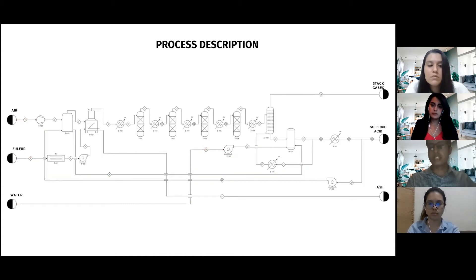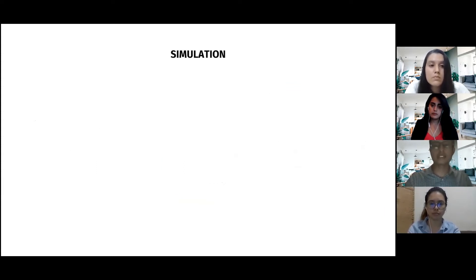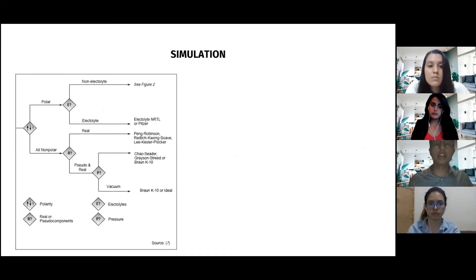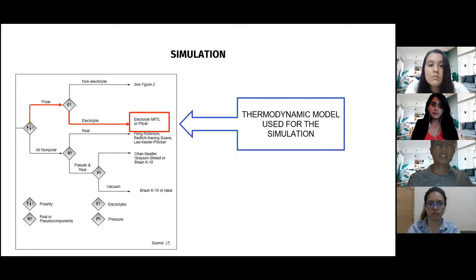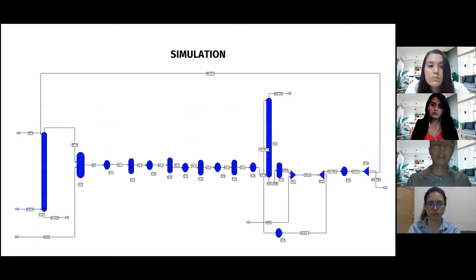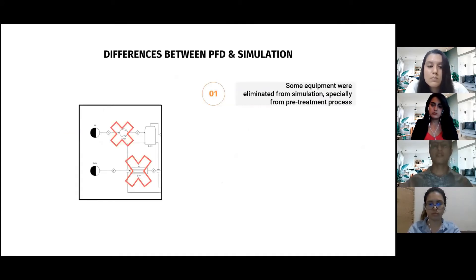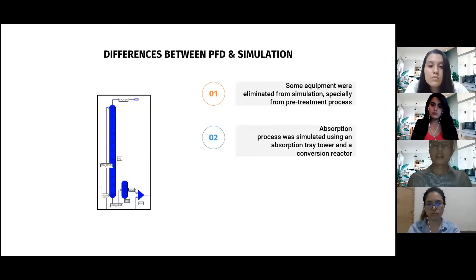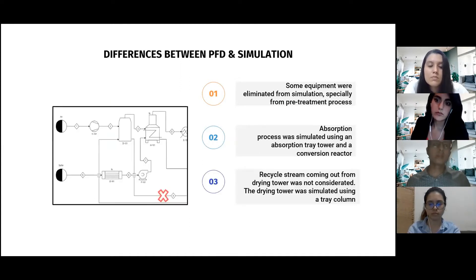There are recycling streams and product streams, with two waste materials: tail gas and ashes. For the simulation, the electrolyte NRTL model was used, selected using the decision tree. There are some differences between the process flow diagram and the simulation: some equipment were eliminated, such as pumps and compressors; the absorption process was simulated using a tray tower rather than a packed tower with a conversion reactor; and recycling streams from the drying tower were not considered. The drying tower was also simulated as a tray column, not a packed column.